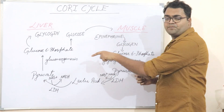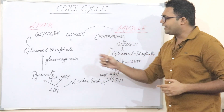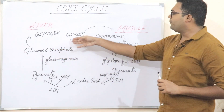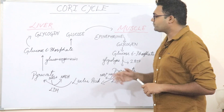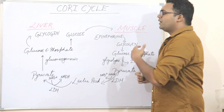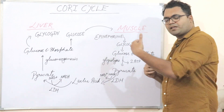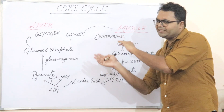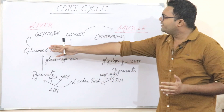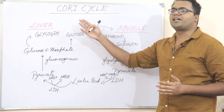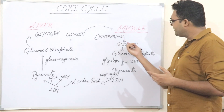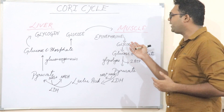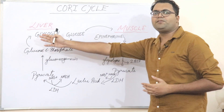Pyruvate would be converted to glucose-6-phosphate via a process known as gluconeogenesis — it will be dealt with in depth in my later videos. It would require 6 more ATPs. Then glucose-6-phosphate can be converted to glucose, and glucose can be resent to the muscle. Or, if the person has switched to a non-strenuous activity, the glucose-6-phosphate could also be converted to glycogen via glycogenesis — and glycogen to glucose-6-phosphate is glycogenolysis, breakdown or synthesis of glycogen.